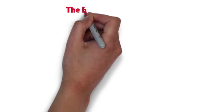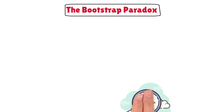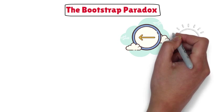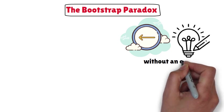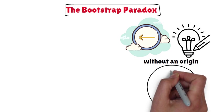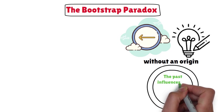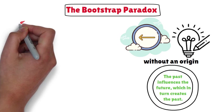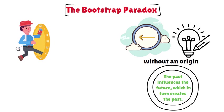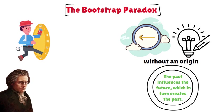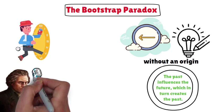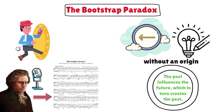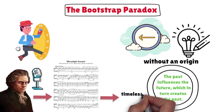The Bootstrap Paradox is a concept in time travel theory where an object or information is created without an origin. In simpler terms, it's a loop where the past influences the future, which in turn creates the past. One example is the case of a time traveler who visits the past and gives Beethoven the music to Moonlight Sonata. Beethoven then publishes the piece under his name, and it becomes a timeless classic.